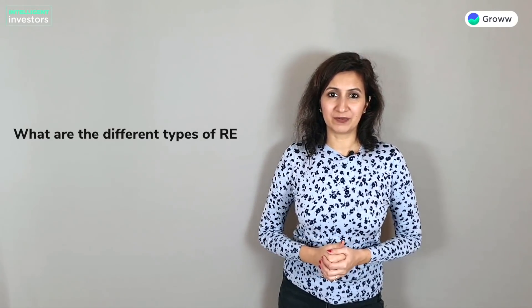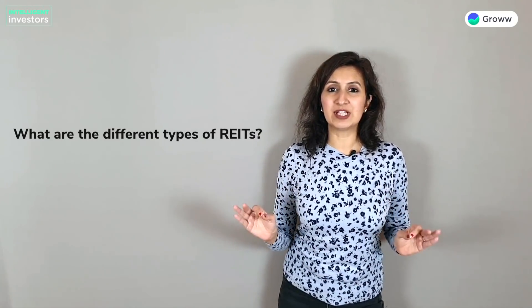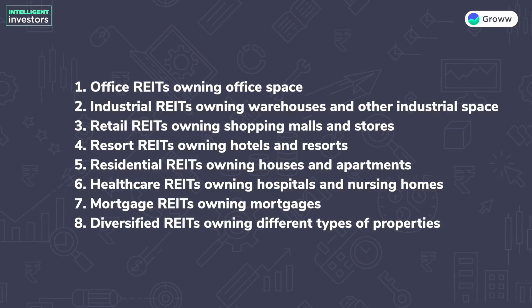Now let's go to the different types of REITs. There are many different types depending upon the type of real estate they are investing in. The most prominent ones are: 1. Office REITs, owning office space. 2. Industrial REITs, which own warehouses or other industrial space. 3. Retail REITs, which own shopping malls or stores. 4. Resort REITs, owning hotels and resorts. 5. Residential REITs, owning houses and apartments. 6. Healthcare REITs, which own hospitals and nursing homes. 7. Mortgage REITs, owning mortgages. 8. Diversified REITs, owning different types of properties.